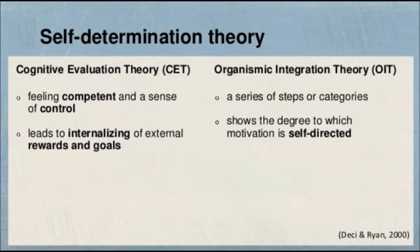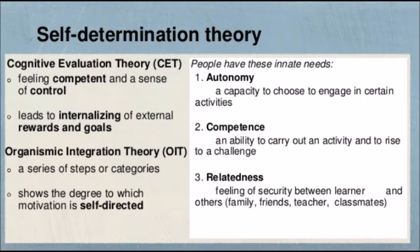Similarly, organismic integration theory deals with a series of steps or categories and shows the degree to which motivation is self-directed. Now, self-determination theory picks three components from these theories: first, autonomy — the capacity to choose to engage in certain activities; second, competence — the ability to carry out an activity and rise to a challenge; and third, relatedness — the feeling of security between a learner and others like family, friends, teachers, classmates, etc.